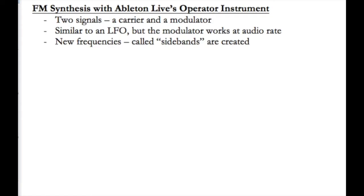With the LFO we use a frequency that is below the rate of human hearing, and we hear it perhaps move the pitch of our original carrier frequency up and down in the wave shape of that LFO. In frequency modulation, we're going to be using sounds that are at audio rate — above that 20 Hz limit where human hearing starts — and the effect is different. We don't just hear a sound moving up and down like we do with an LFO. Instead we generate new frequencies, called side bands, which create a more rich spectrum from our original sound.